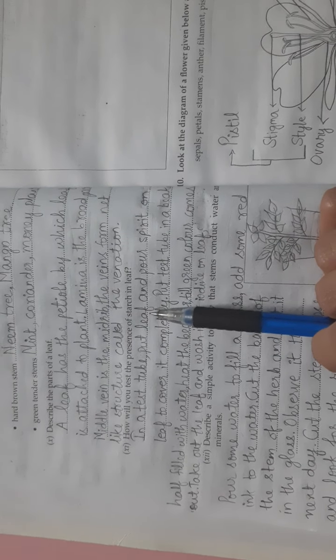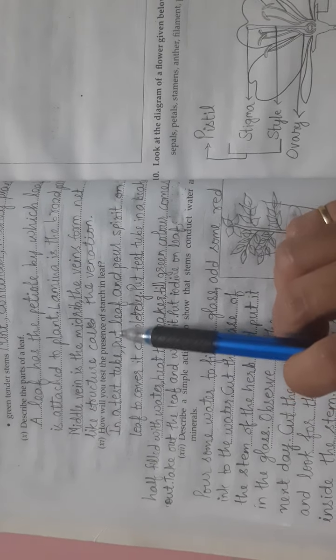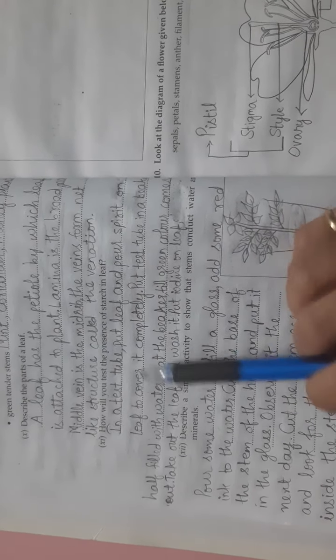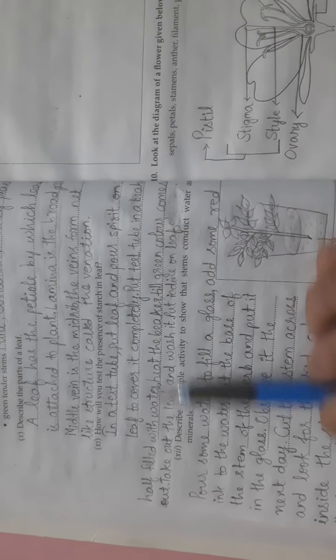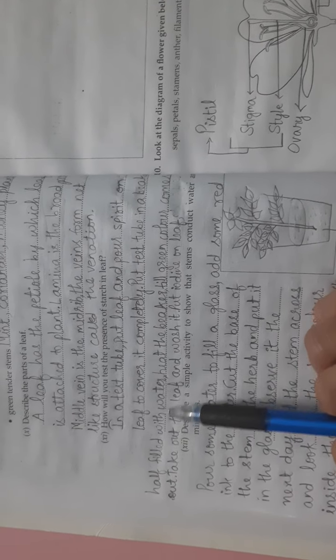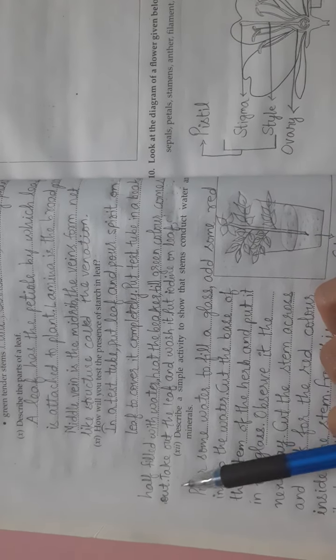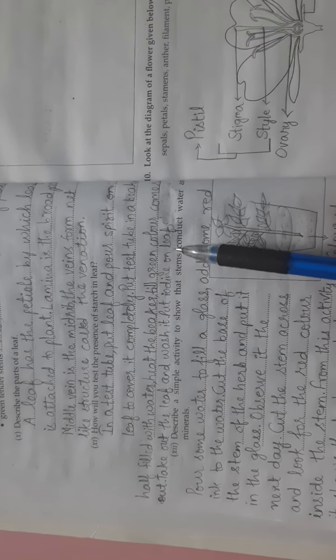Eleventh question is, how will you test the presence of starch in leaf? In a test tube put leaf and pour spirit on leaf to cover it completely. Put test tube in a beaker half filled with water. Heat the beaker till green color comes out. Take out the leaf and wash it. Put iodine on the leaf and you will observe blue green color.